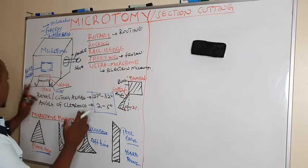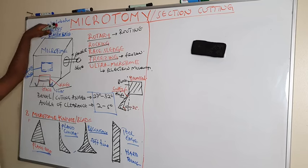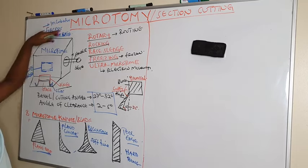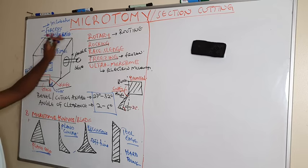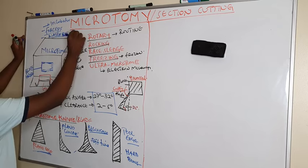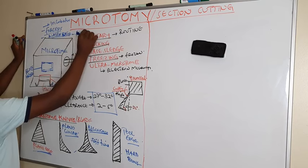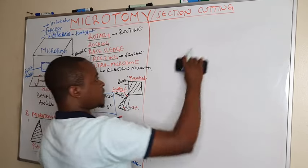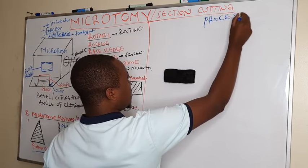After looking at the different materials used in microtomy or section cutting — not forgetting that we shall need an incubator at 60 degrees, forceps to pick the ribbons during cutting, and a water bath for froting out — let us look at the process of microtomy.